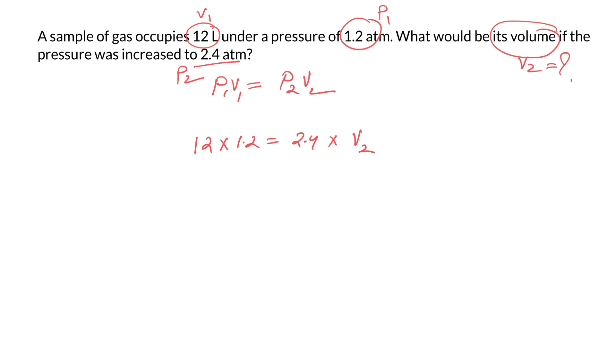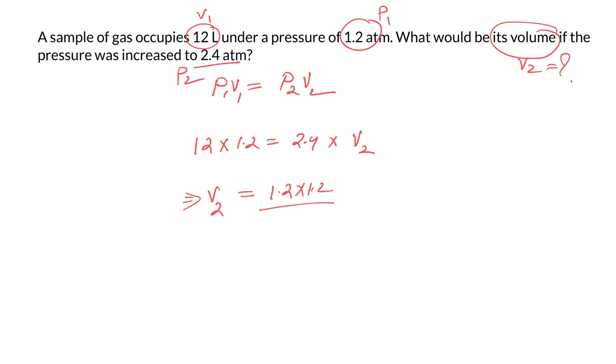Just place the variables: 12 times 1.2, you don't know the volume, you only know the pressure, it's 2.4 multiplies V2. That means V2 is 12 into 1.2 divided by 2.4. If you do the calculation, it comes to be around 6 liters. Very simple.